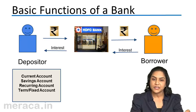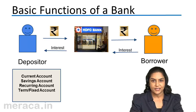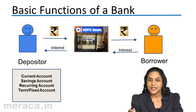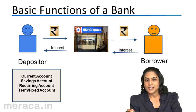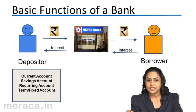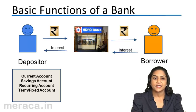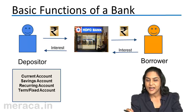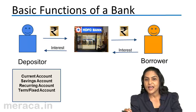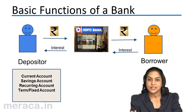The bank compensates the depositor by paying interest. This is an expense for the bank. On the other side, the bank lends money and gets interest as income from the borrower. This lending is an asset for the bank and the interest is its income.